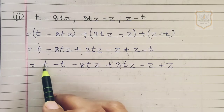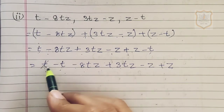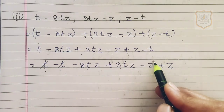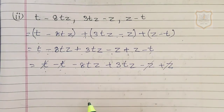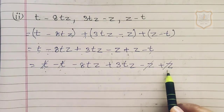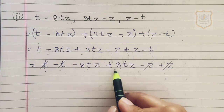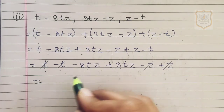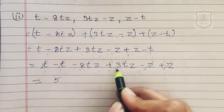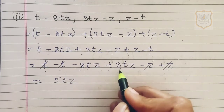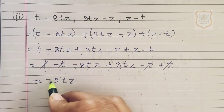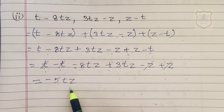Positive t and negative t cancel to zero. Negative z and positive z also cancel to zero. For minus 8tz plus 3tz: 8 minus 3 is 5, and the greater digit is 8 which is negative, so the result is minus 5tz. The answer is minus 5tz.